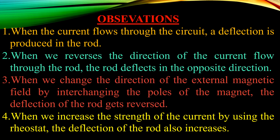Now we will see the observations of this activity. When the current starts flowing through the circuit, a deflection is produced in the rod — the aluminium rod deflects. Second, when we reverse the direction of the current flow through the rod, the rod deflects in the opposite direction. If you interchange the connections to the positive and negative terminals of the battery, the current direction reverses and the aluminium rod deflects in the opposite direction.